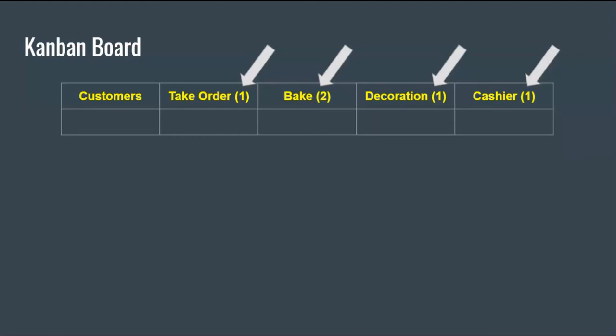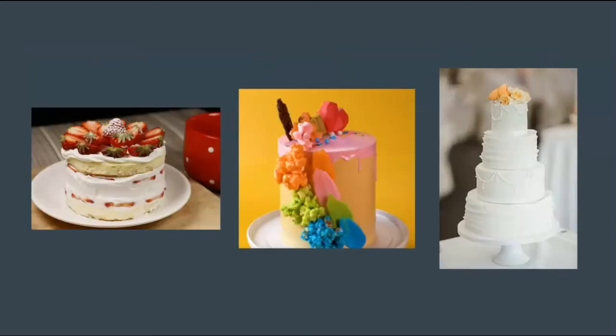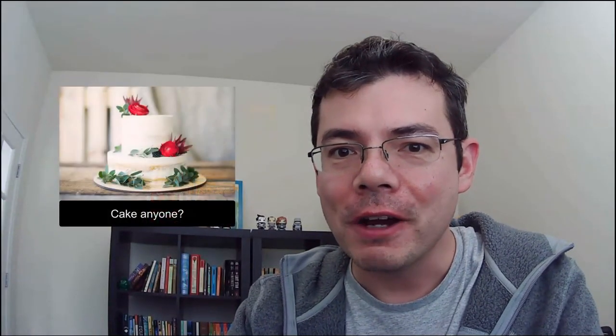I'll talk about Kanban in more detail another time. You could also wonder, what if someone wants a large cake or a small cake? In that case, a large cake would be like three regular ones worth of work, a medium cake would be like two cakes worth of work, and so on. I know I talked about a bakery instead of a software development team, but I think you'll agree that there are many parallels in both instances, and that the Theory of Constraints can be used successfully in both.